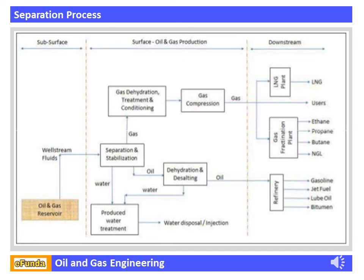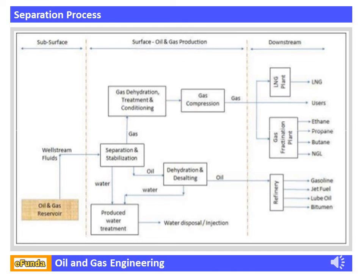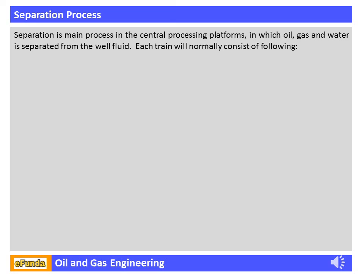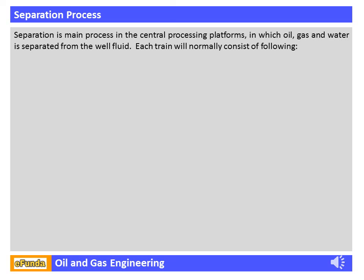Separation Process: A complete CPP facility can be seen from the picture where all facilities are separately identified. Separation is the main process in the CPP, in which oil, gas, and water are separated from the well fluid. Well fluid from various well platforms and subsea manifolds reaches the process complex via subsea pipelines and risers, and is further processed in more than one train.